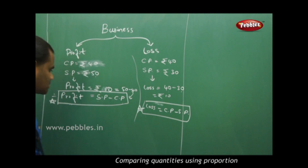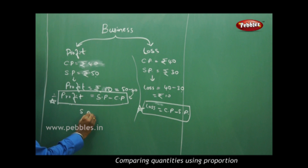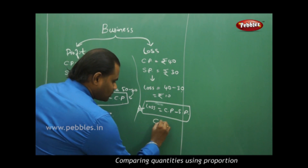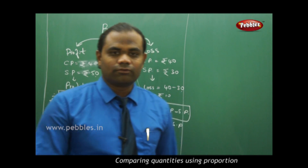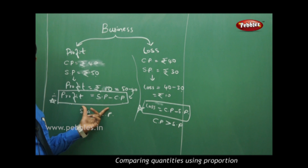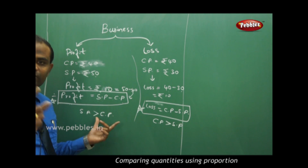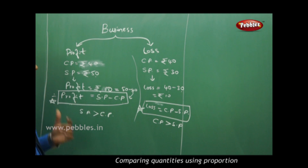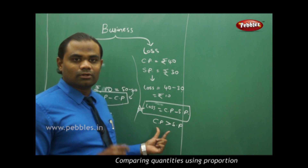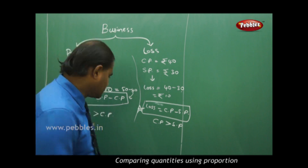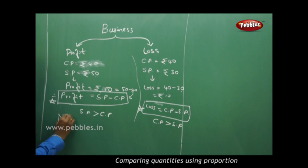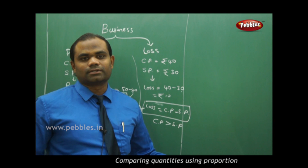In the case of profit, selling price will always be greater than cost price. In the case of loss, cost price will always be greater than selling price. If selling price is always greater than cost price, we get a profit. If cost price is always greater than selling price, we get a loss. If selling price and cost price are equal, then we get neither a profit nor a loss — we are neutral.